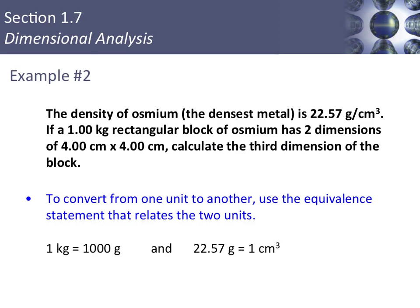In this next example, we'll look at how density can be used as an equivalence statement or factor in a dimensional analysis problem. Because the mass of the rectangular block is given in kilograms, we'll use an equivalence statement to convert to grams, since density has grams in it. We use density as: 22.57 grams equals one cubic centimeter, when the density is 22.57 grams per cubic centimeter.